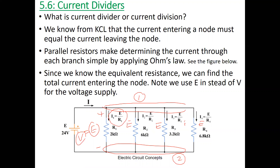When we apply Ohm's law, we can find I1 = E/R1, I2 = E/R2, I3 = E/R3, and I4 = E/R4. And as mentioned, from KCL the current entering the node must equal the current leaving the node. The current entering is I, and the currents leaving are I1, I2, I3, and I4.